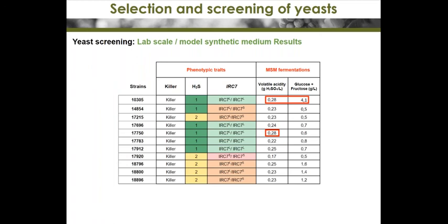The amount of carbon dioxide released was determined by measurement of weight loss. Volatile acidity and reducing sugars were determined at the end of alcoholic fermentation. This table shows results of phenotypic traits in synthetic medium fermentation for 11 preselected strains. Some strains show a slight defect — the capacity to produce slightly high volatile acidity and more residual glucose-fructose at the end of fermentation.